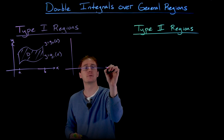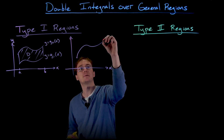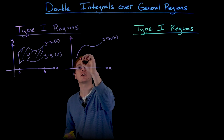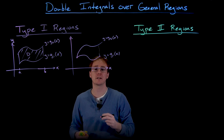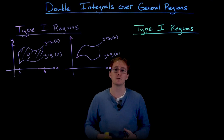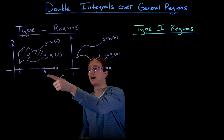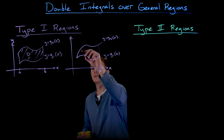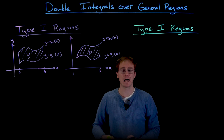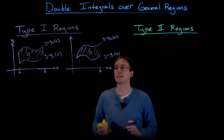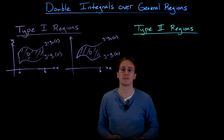Some other examples of a type 1 region: our two curves might meet at one endpoint, with the top curve y equals g2 of x and the bottom curve g1 of x starting at that same point. They may have a point of intersection we can find by setting g2 and g1 equal and solving for x, while the other end is given by some x value like x equals b. A third case is where both endpoints correspond to points of intersection between our two curves.